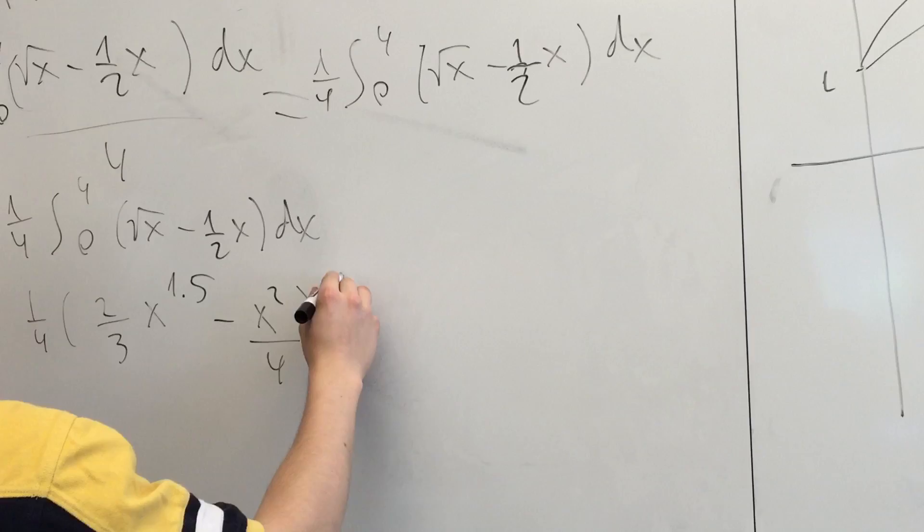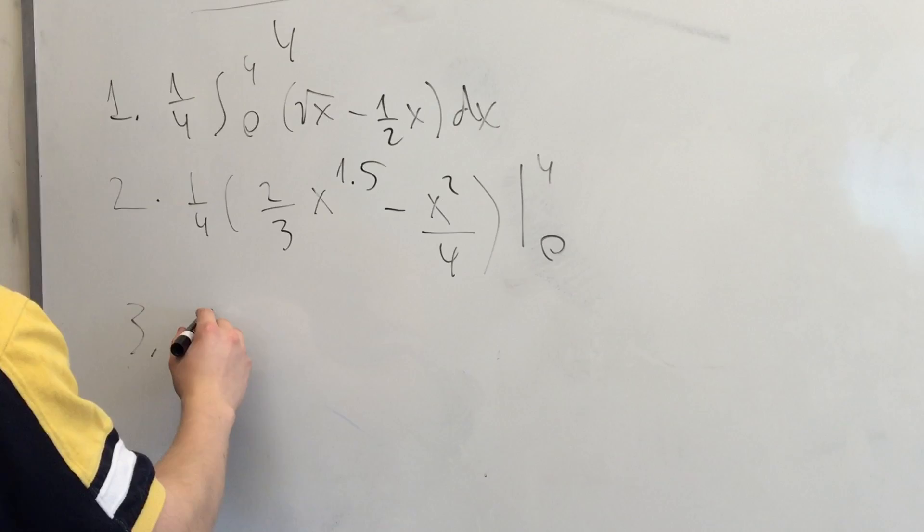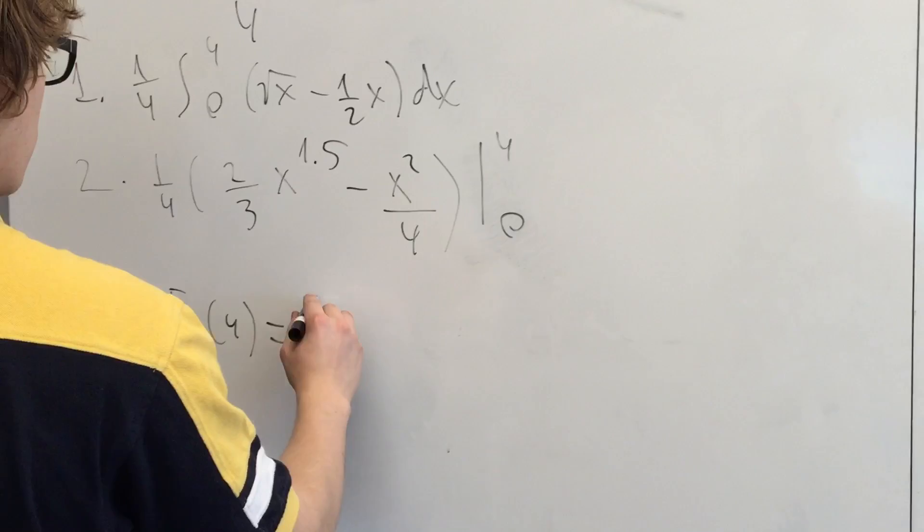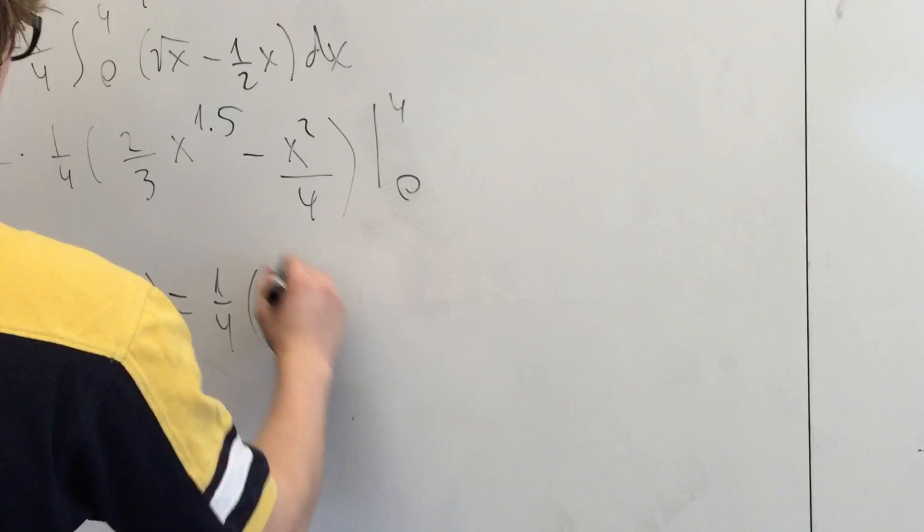Now f(4) will be equal to (1/4) times (2/3) times 4 to the 1.5, which is 8, minus 16/4.